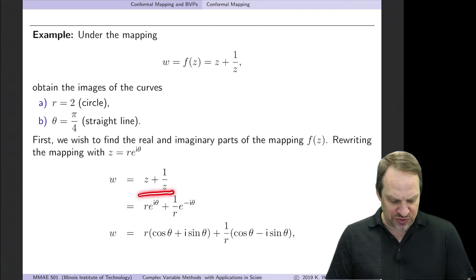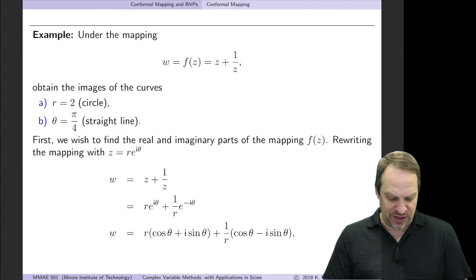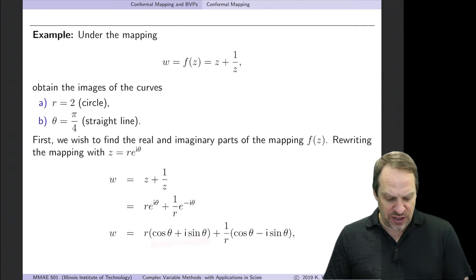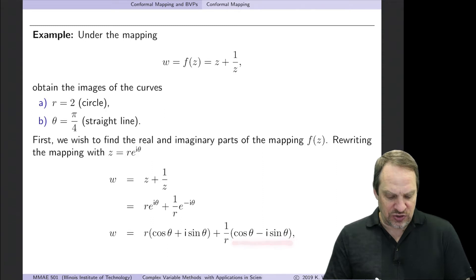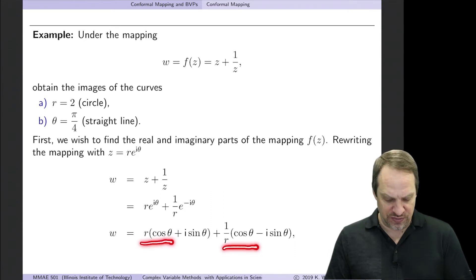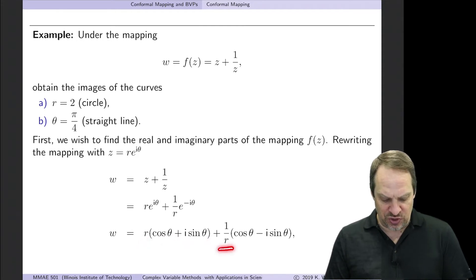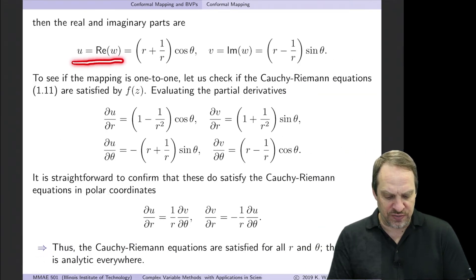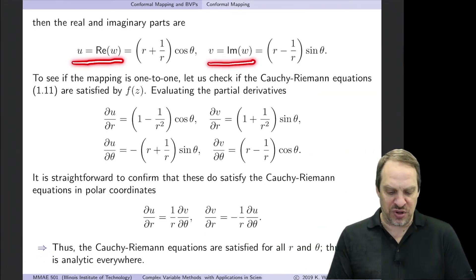So w = z + 1/z = re^(iθ) + (1/r)e^(−iθ). From Euler's formula, e^(iθ) = cosθ + i sinθ and e^(−iθ) = cosθ − i sinθ. The real part u = r cosθ + (1/r) cosθ, and the imaginary part v = r sinθ − (1/r) sinθ.